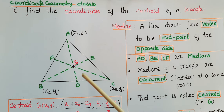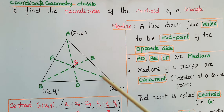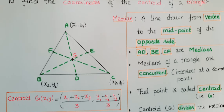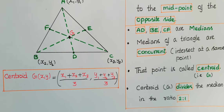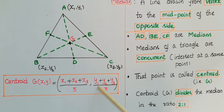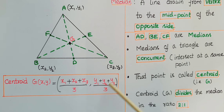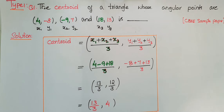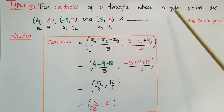Similarly, G divides CF also in the ratio 2:1. If you assume the three vertices as (x1, y1), (x2, y2), and (x3, y3), then the centroid G(x, y) is equal to ((x1 + x2 + x3) / 3, (y1 + y2 + y3) / 3).